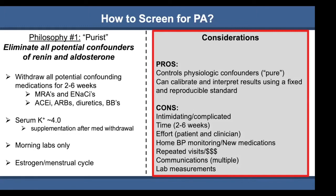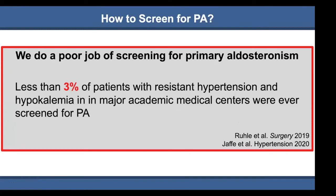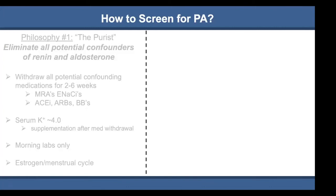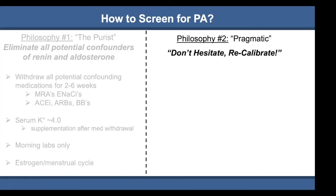In the United States, less than 3% of patients with resistant hypertension and hypokalemia are ever screened for primary aldosteronism. A cumbersome, complicated pathway is unlikely to increase screening. The alternative is philosophy 2, which I call 'don't hesitate, recalibrate.' In this approach, you measure renin and aldosterone at any time on any medication. You should never miss an opportunity to screen, because if the renin is suppressed, your results are interpretable and the goal is to convince yourself the patient has renin-independent aldosterone production.